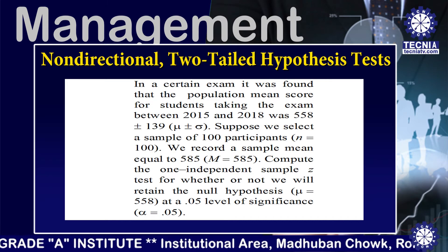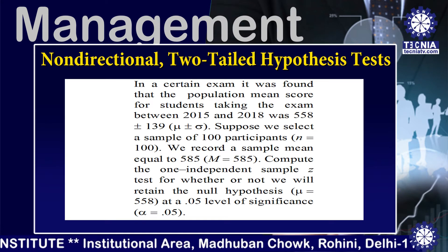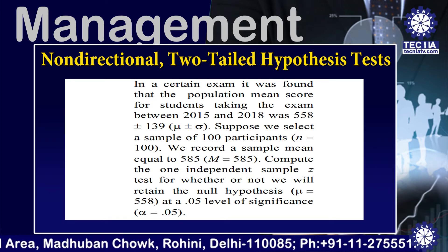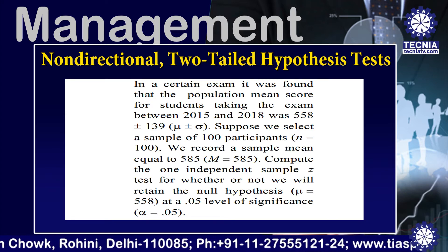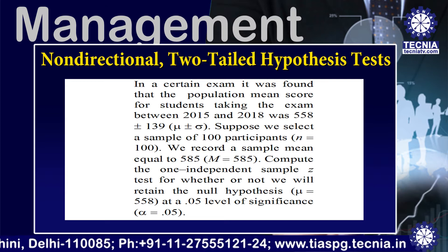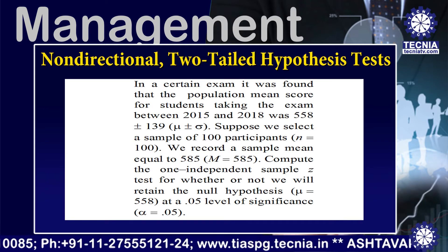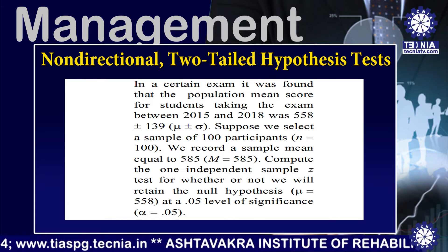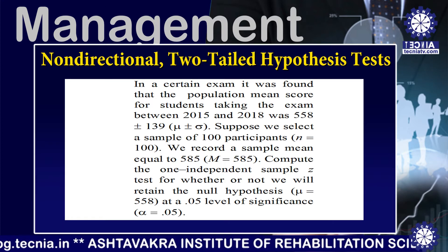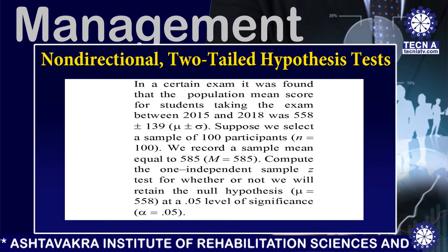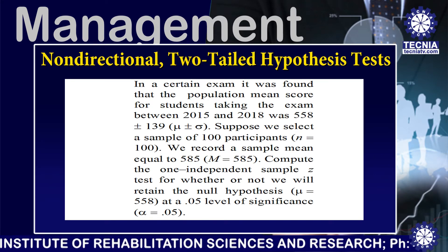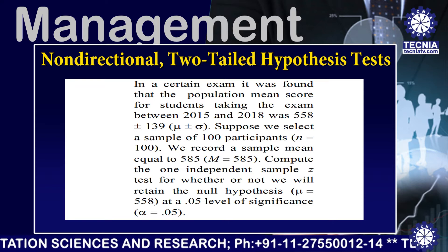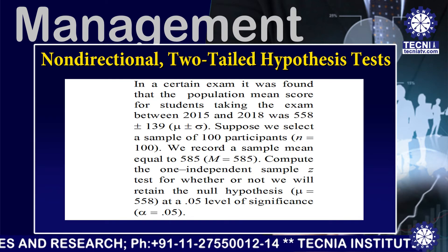In a certain exam, it was found that the population mean score for students taking the exam between 2015 and 2018 was 558, with sigma equal to 139 — that is mu = 558, sigma = 139. Suppose we select a sample of 100 participants (n = 100) and record a sample mean equal to 585. Compute the one independent sample Z test for whether or not we retain the null hypothesis (mu = 558) at a 0.05 level of significance (alpha = 0.05).